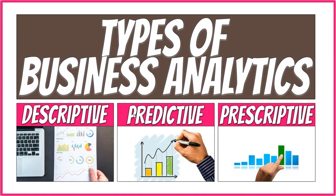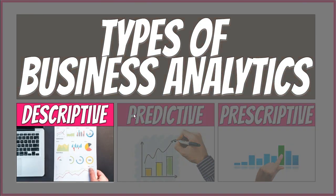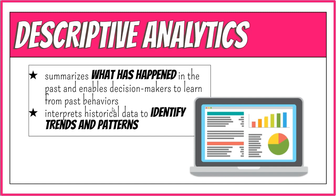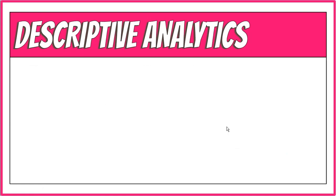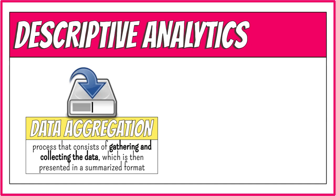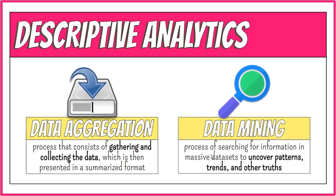The first type of analytics is descriptive. Descriptive analytics summarizes what has happened in the past and enables decision makers to learn from past behaviors. It interprets historical data to identify trends and patterns using data aggregation and data mining techniques. Data aggregation is the process of gathering and collecting data, which is then presented in a summarized format — the data needs to be collected, centralized, cleaned, and filtered to remove any inaccuracies or redundancies. Data mining is the process of searching for valuable business information in massive datasets to uncover patterns, trends, and other truths about data that aren't initially visible.